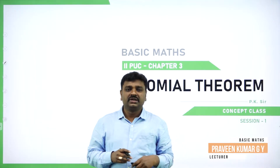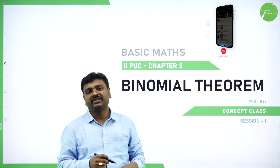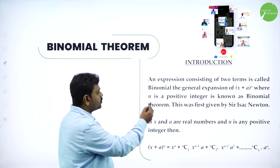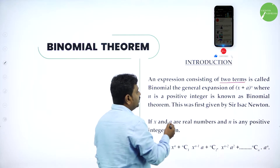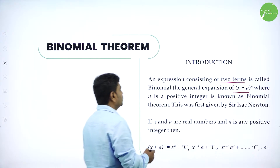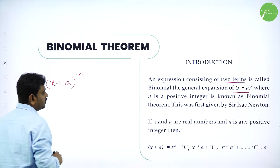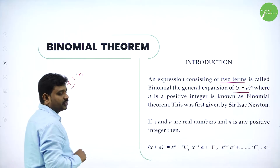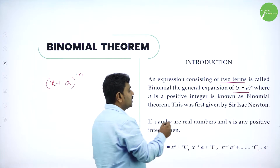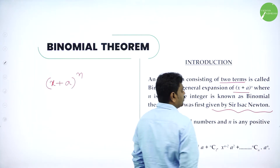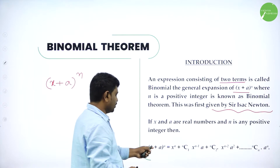Welcome to the session, dear students. Today I am starting with a new chapter, binomial theorem, one of the important chapters for board exams. An expression containing two terms is called a binomial. Bi means two terms, and the general form is x plus a power n. Here n is always a positive integer, and this was first given by Sir Isaac Newton. x and a are real numbers.